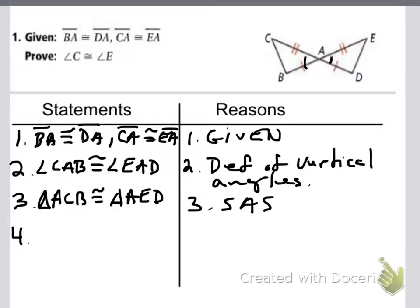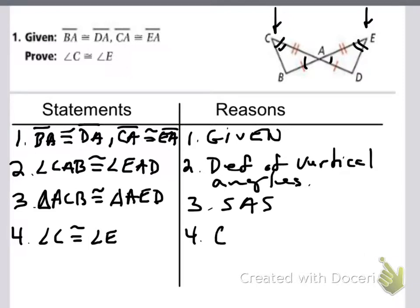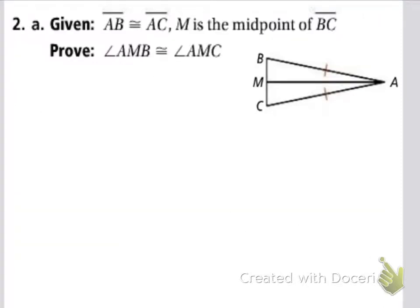Now we want to prove that angle C is congruent to angle E. Angle C corresponds with angle E, so we say that angle C is congruent to angle E because C and E are corresponding parts of congruent triangles — so by CPCTC, they are congruent.